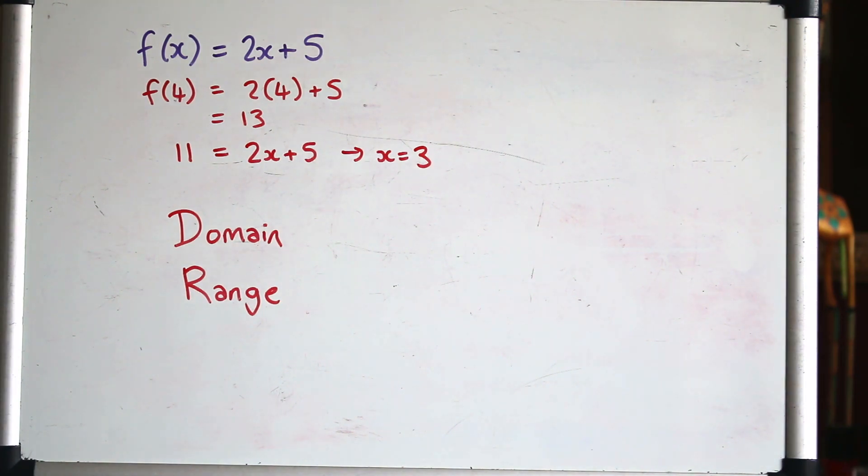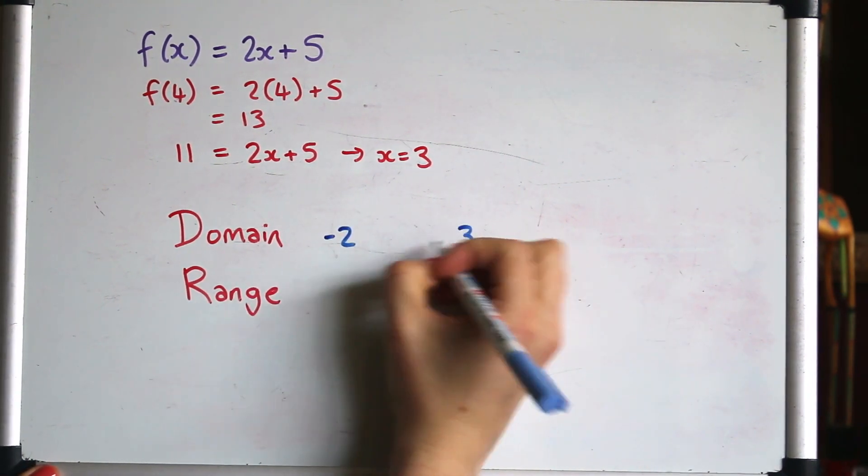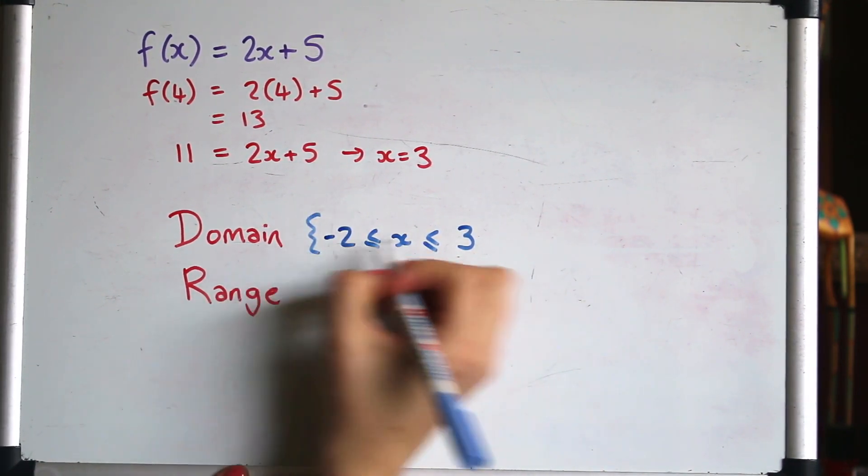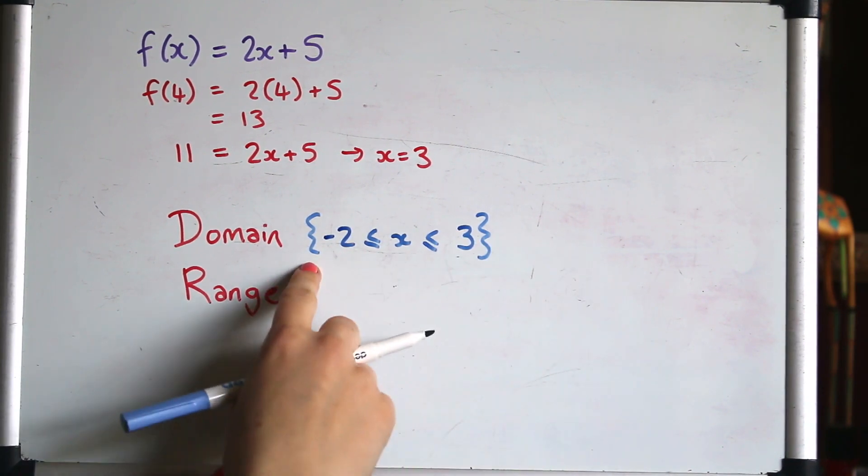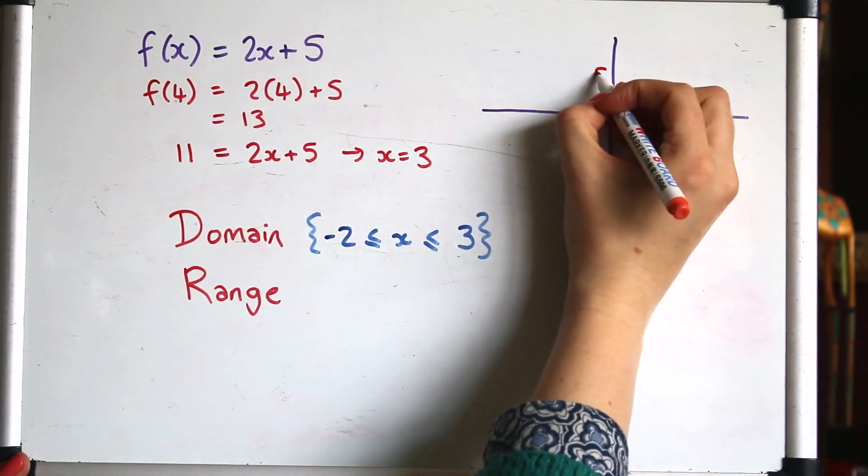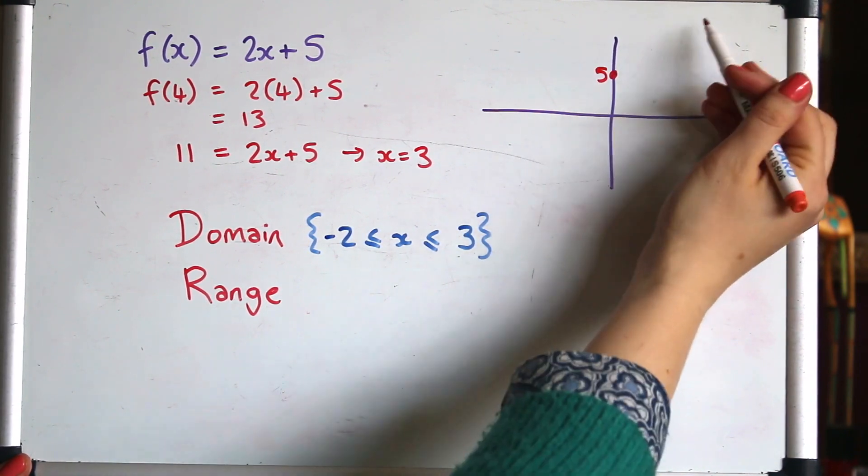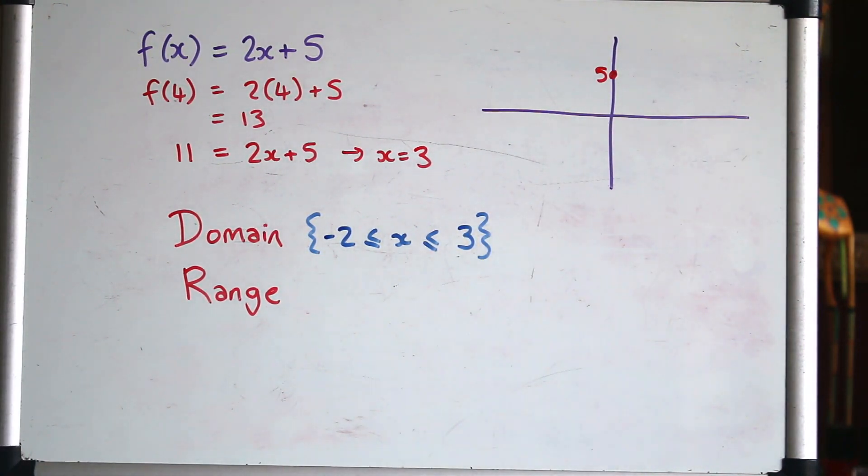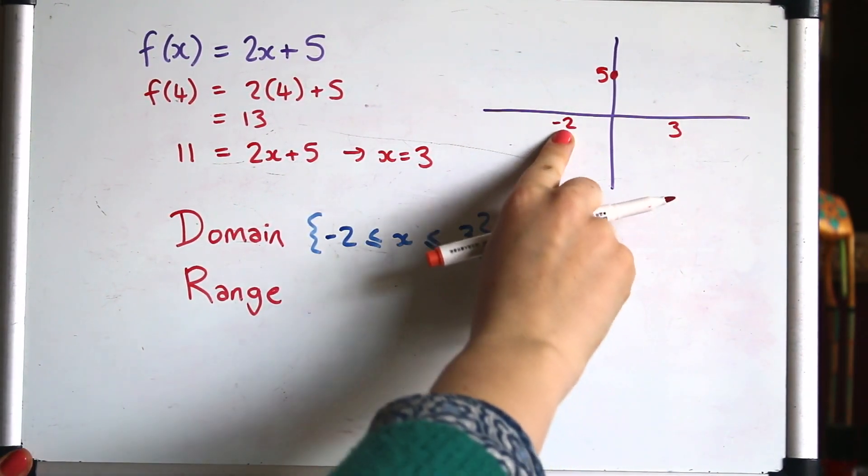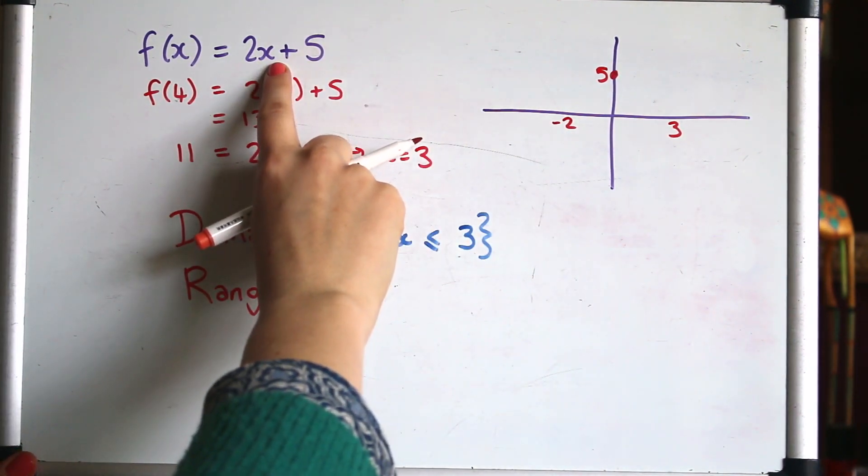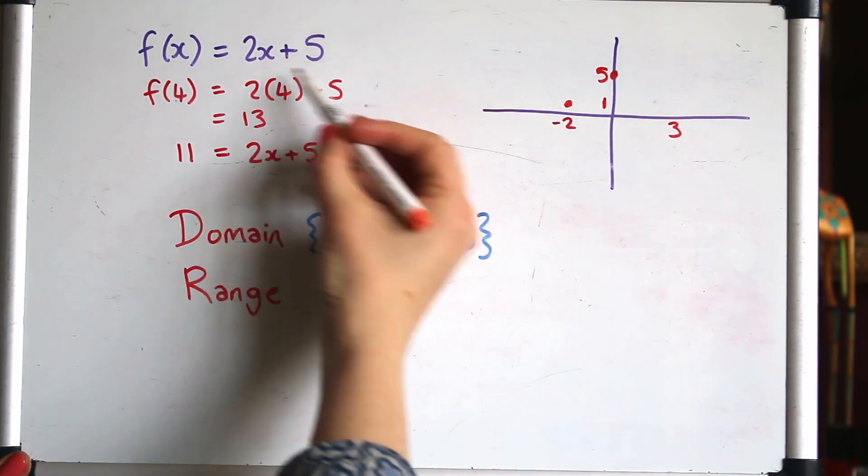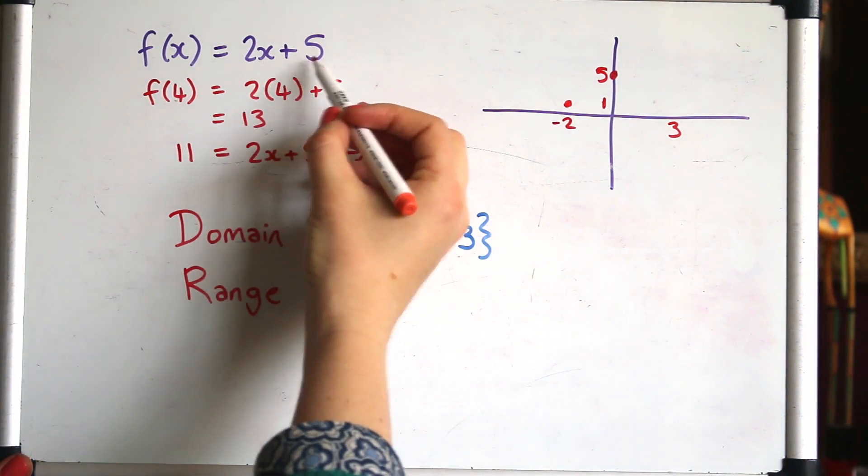So let's restrict the domain to all the numbers between minus 2 and 3, including them. Sometimes you see the domain and the range written in curly brackets. The 2x plus 5 will be a straight line, so that will be crossing at 5 and it's a positive gradient. Let's figure out where it will be when x is minus 2 and 3. Putting minus 2 into here, 2 times minus 2 plus 5, that would be 1. And putting 3 as our x, 2 times 3 plus 5 is 11.